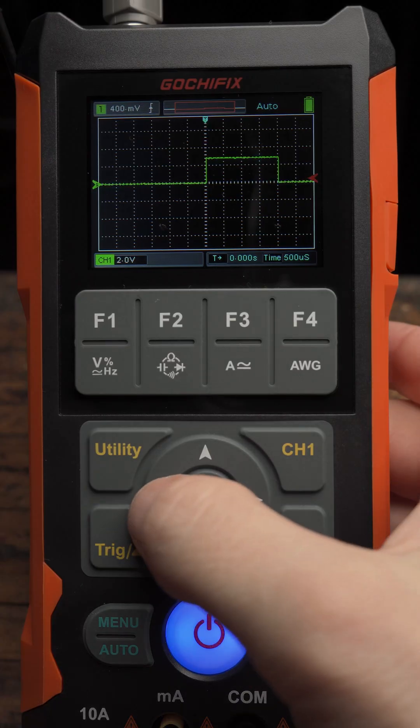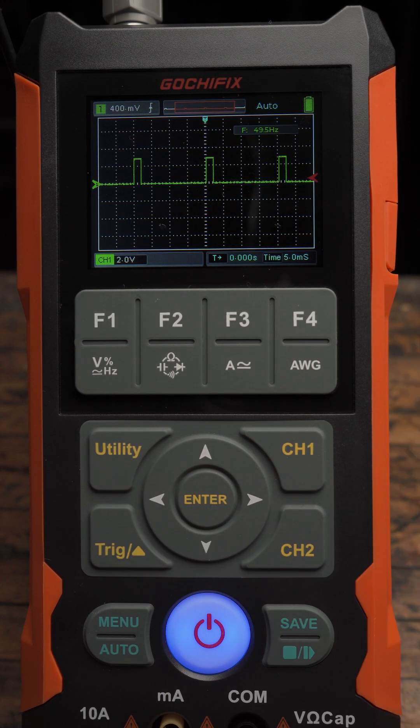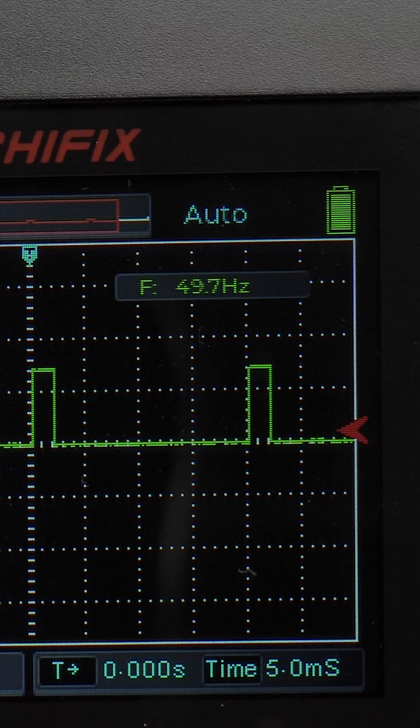Finally, we'll determine the frequency by zooming out to at least 3 pulses. Using the oscilloscope's frequency tool, we can see the signal frequency is 50 hertz.